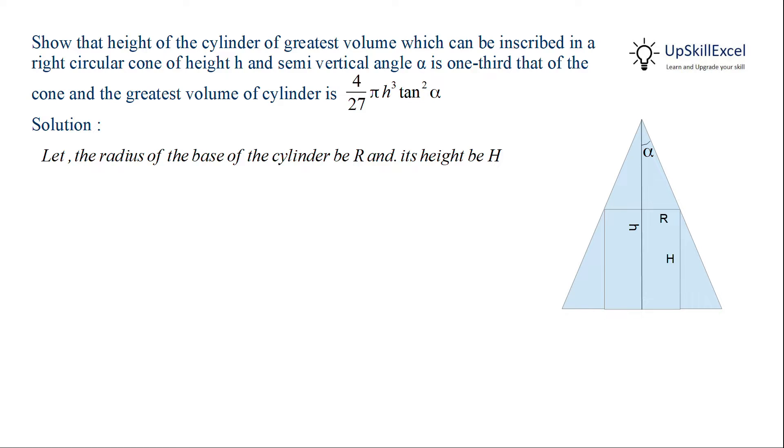So let r be the radius of the base of the cylinder and its height be H. Therefore in triangle OEF we observe that tan alpha is equal to EF over OE. Now EF is equal to the radius of the cylinder and OE is equal to OC minus EC, where OC is the height of the cone and EC is the height of the cylinder. From here we get that r is equal to height of cone minus height of cylinder multiplied by tan alpha.